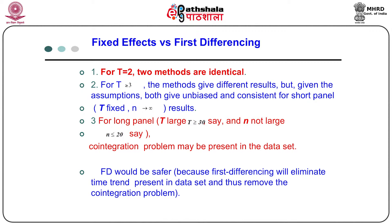Given the assumptions, both are unbiased and consistent for short periods. As t is fixed and n tends to infinity, we have unbiased and consistent estimators. For long periods — say t larger than 30 — and n not large, a co-integration problem may be present in the dataset. The first difference method should be safer because first differencing eliminates the time trend present in the dataset and thus removes the co-integration problem.